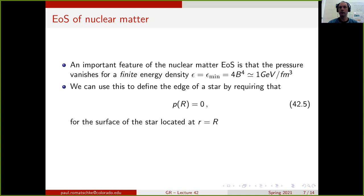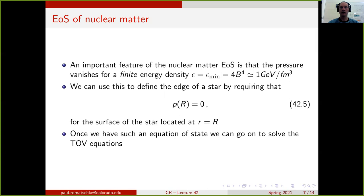Since the pressure goes to zero at a finite energy density, we can use this to define the edge of the star by requiring that the pressure at some radius r equals zero. That defines the surface of the star: wherever the pressure is positive is still part of the star, and outside the pressure is zero — that is considered vacuum. By this definition, the surface of the star is located at r = R. Once we have an equation of state, the TOV equations are complete and we can solve them.